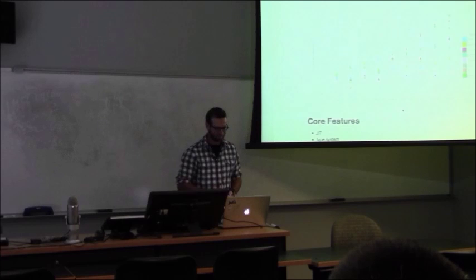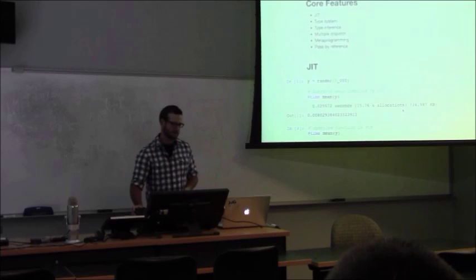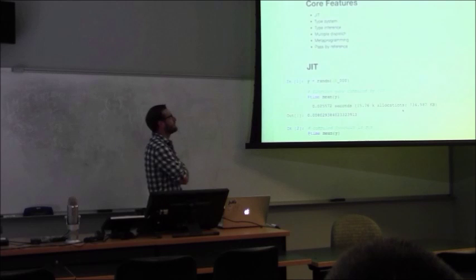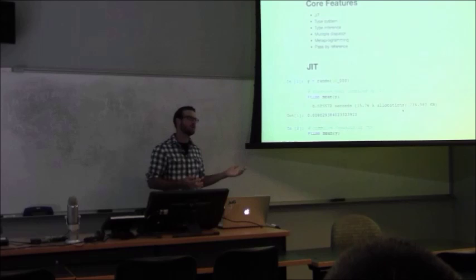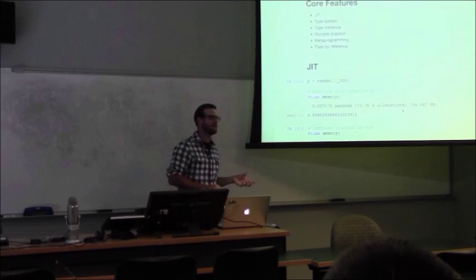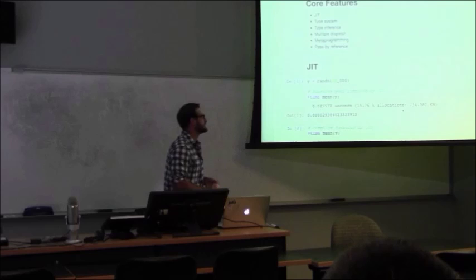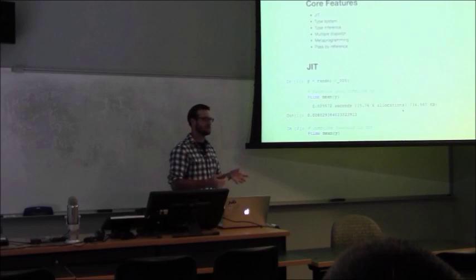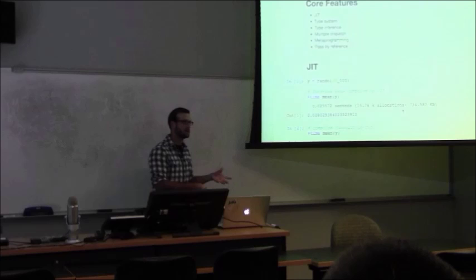Here are the core features they used to get performance. So they used a JIT — Just-in-Time Compiler — so right before something is run, it gets compiled. It has a really great type system and uses type inference, so if you've ever written in a language like C++ where you have to specify the types of all the objects, you do not have to do that in Julia because Julia can infer the types. Multiple dispatch is the idea that functions will evaluate different code depending on the types of the arguments. There's also metaprogramming — writing code that writes code — and arguments pass by reference, so you can change things in place, in contrast to R.